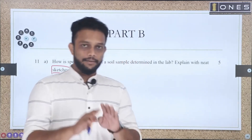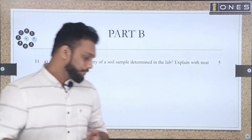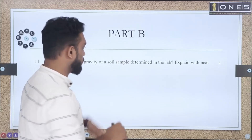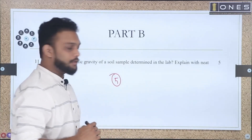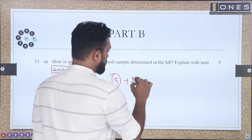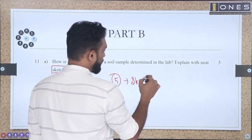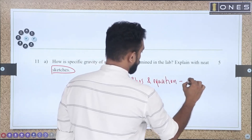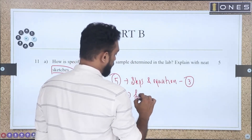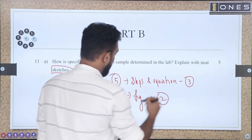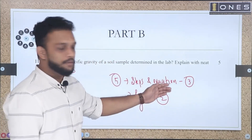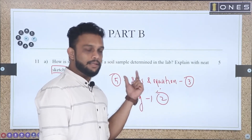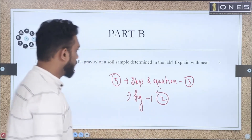If you have the sketch clear, the two marks are clear. Then you have the procedure. If you look at the steps and the equation, you have 3 marks. If you look at the correct figure, you have 2 marks. This is the mark distribution.